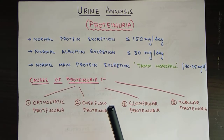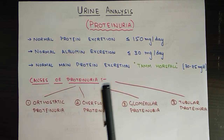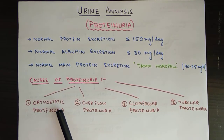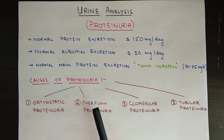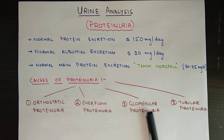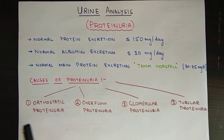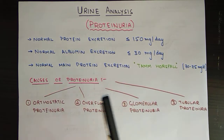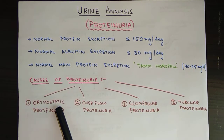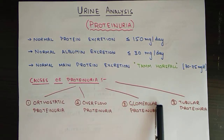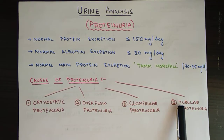Now, coming to the causes and types of proteinuria. The first type is orthostatic proteinuria, the second is overflow proteinuria, the third is glomerular, and the fourth is tubular. These types depend on their cause — orthostatic is postural, overflow is due to excess protein in the blood, glomerular is due to a defect in the glomeruli, and tubular is due to a defect in the tubules of nephrons.